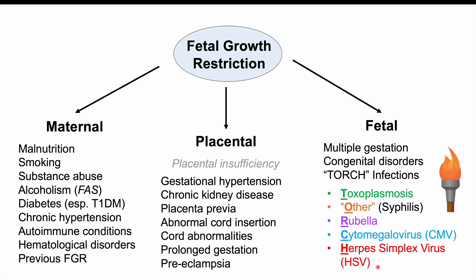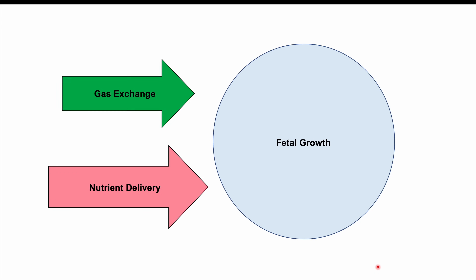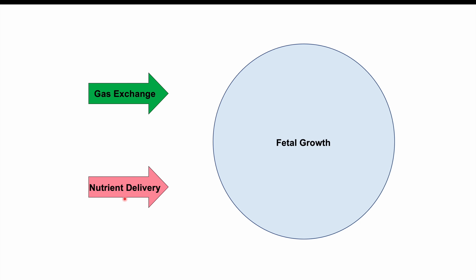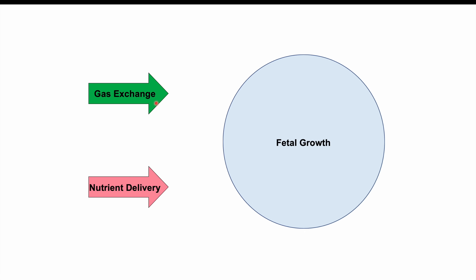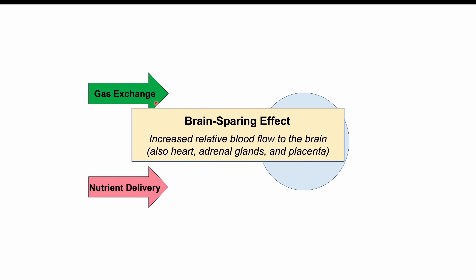Fetal growth requires adequate gas exchange and nutrient delivery. If either is reduced — due to placental insufficiency, maternal smoking, substance use, or other health conditions — this leads to fetal growth restriction. Because of this reduction, we see the brain sparing effect, where blood, along with gases and nutrients, is shunted to the most critical areas: the brain, heart, adrenal glands, and the placenta itself.